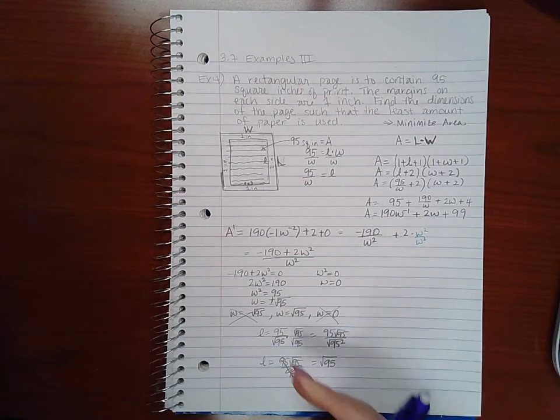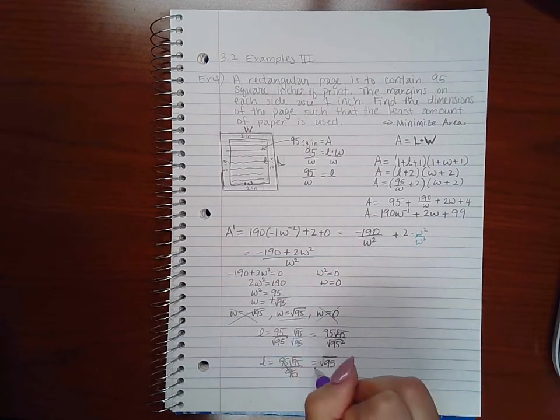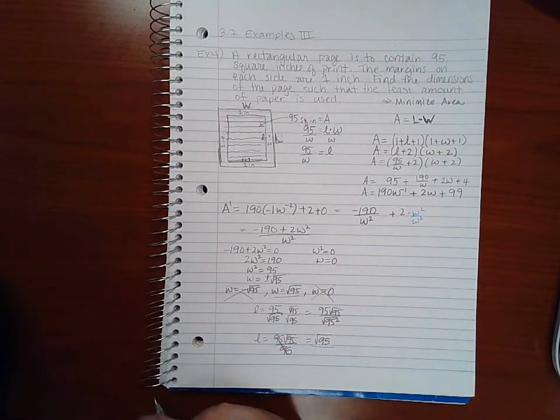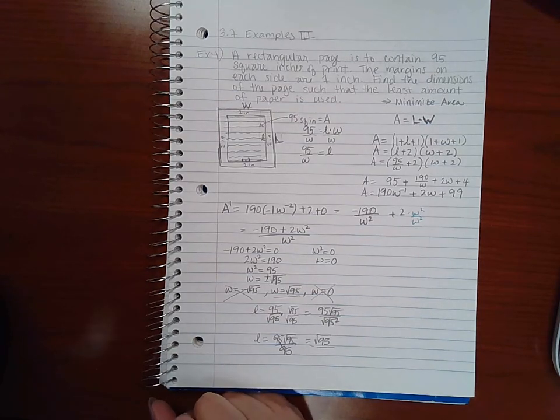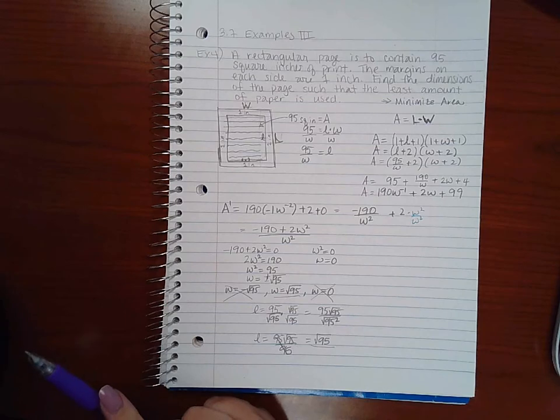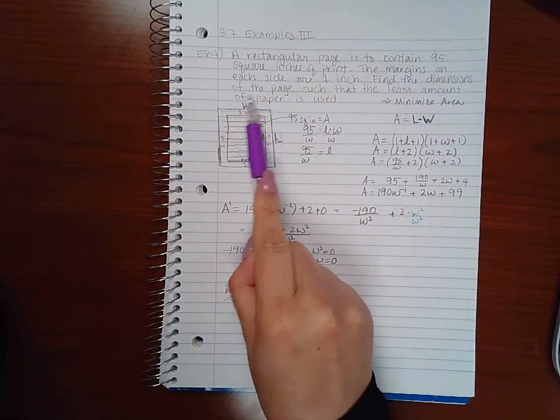Again, maximizing or minimizing a rectangle, guess what? We ended up with a square again. But these are not the dimensions that they asked me about. They didn't say find the dimensions of the print, because little l and little w are just the dimensions of the little print.